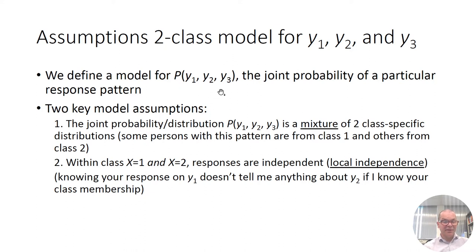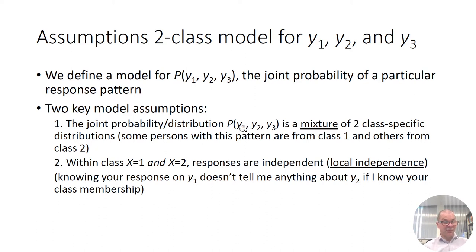We call this the joint probability of a particular response pattern. There are two key model assumptions. The first assumption is that the joint probability is a mixture of two class-specific joint probabilities — two class-specific distributions. Some people with a given pattern, for example the 1-1-1 pattern, come from latent class number 1, and some other people come from latent class number 2. So this probability is a mixture of two groups, two latent classes.